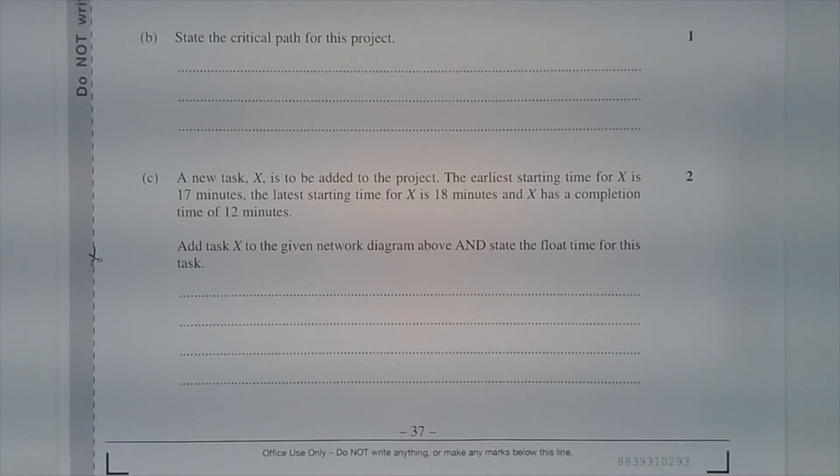Part C: A new task X is to be added to the project. The earliest starting time for X is 17 minutes, the latest starting time for X is 18 minutes, and X has a completion time of 12 minutes. Add task X to the given network diagram above and state the float time for this task.